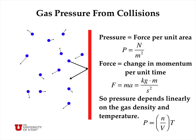Force is measured in Newtons in SI units, and that's a change in momentum per unit time according to Newton's equations. Pressure depends mainly on two things: first, the density of the molecules, which is linearly proportional to the number of molecules that hit the wall per unit time, and then the speed at which the molecules hit the wall. So pressure depends linearly on both the gas density and the temperature of the molecules.